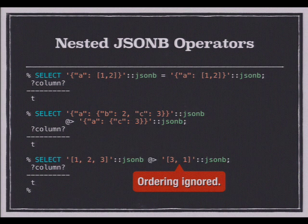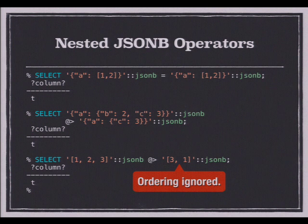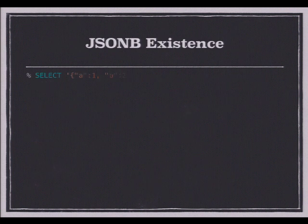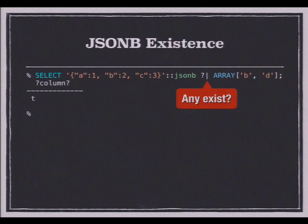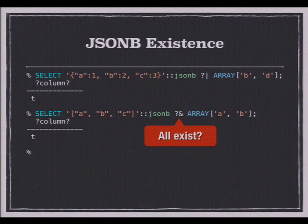When you use the containment operator against a JSONB array, you're saying: does it contain these values? The order in the array doesn't matter — I'm saying is there a 3 and a 1 in array [1,2,3]? It has both, therefore true. Then we have: do any of these values exist in here? Does this JSONB value have a B or D key? It does, so it returns true. Or does it have both an A and a B key?